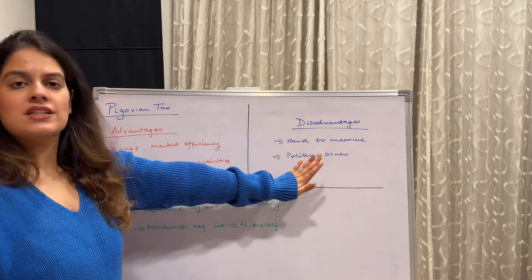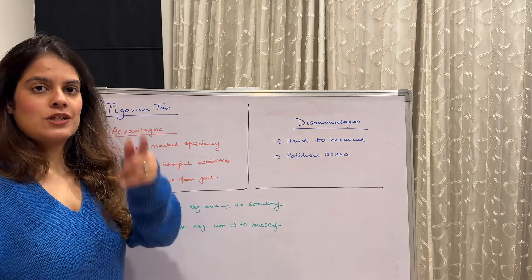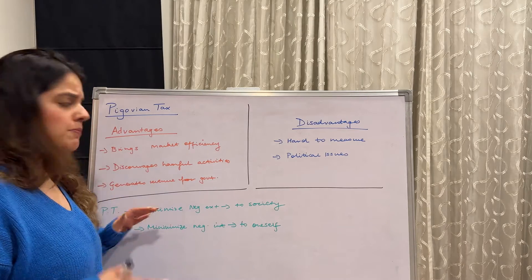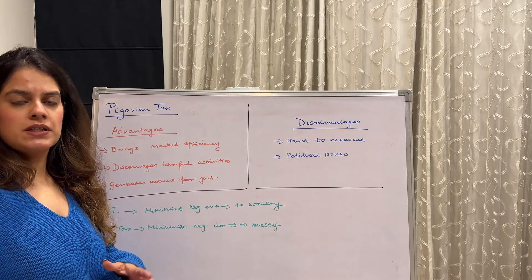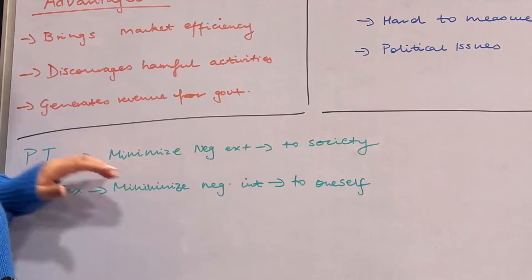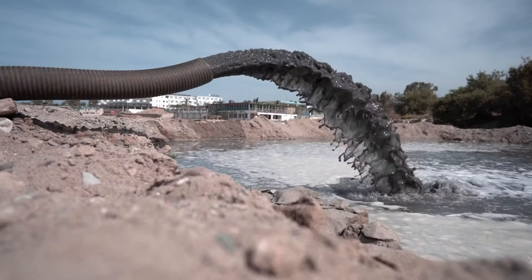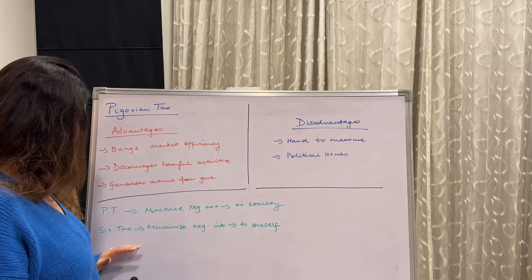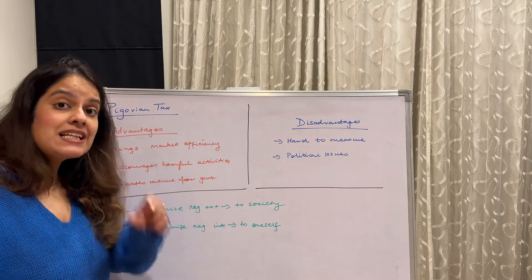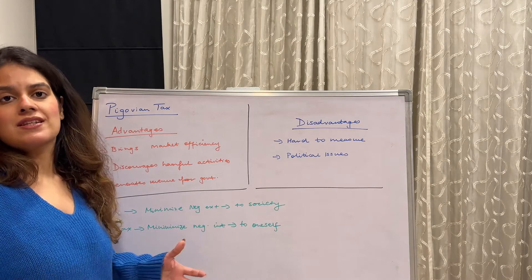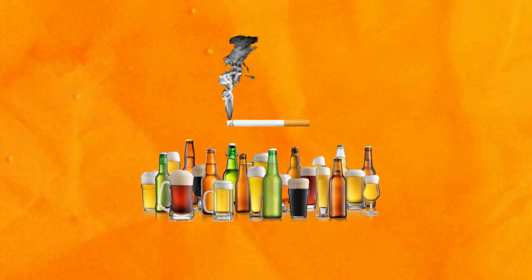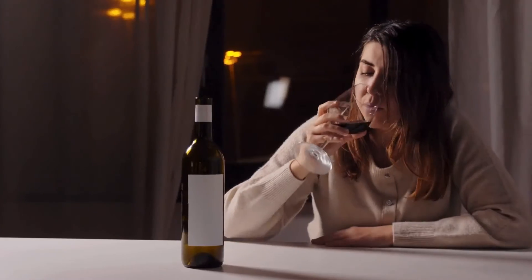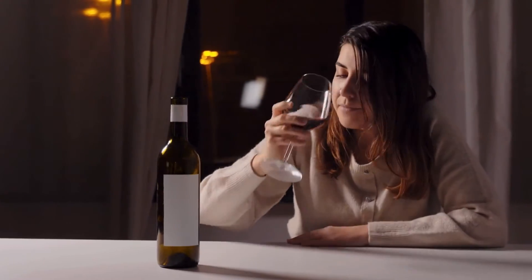You might have heard of sin taxes — Pigovian taxes and sin taxes are very similar, but the main difference is that Pigovian tax minimizes negative externality, which causes harm to society, whereas sin taxes minimize negative internalities, which cause harm to oneself. For cigarettes and alcohol, it's actually both taxes, because there is negative internality and negative externality — it causes harm to society and to the individual as well.